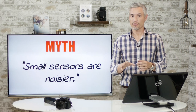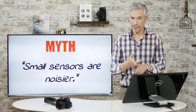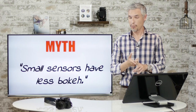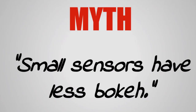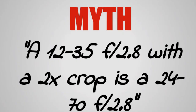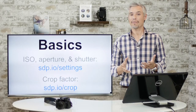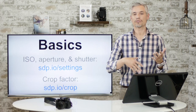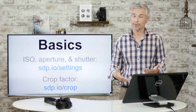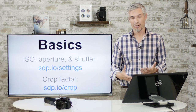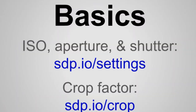First up, a couple of myths that I plan to disprove. Small sensors are noisier — just not true. Small sensors have less bokeh — also not true. A 12-35 f2.8 lens with a 2x crop is a 24-70 with an f2.8 — not true. If you haven't mastered the basics of shutter speed, ISO, and aperture, this will be a little over your head. Be sure to watch my overview of those camera settings as well as my overview of crop factors and why you need to apply it to aperture.